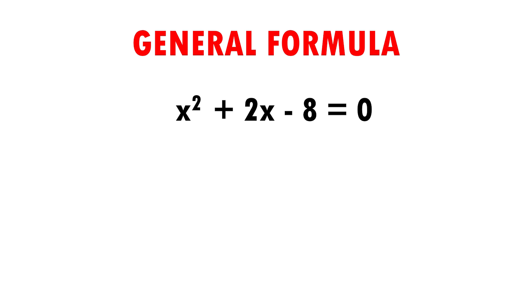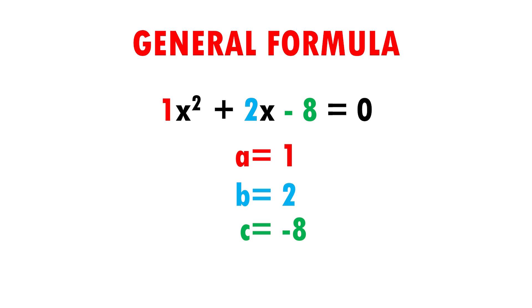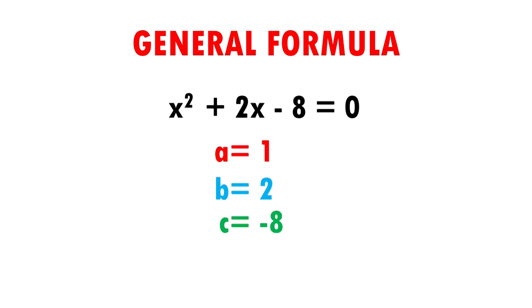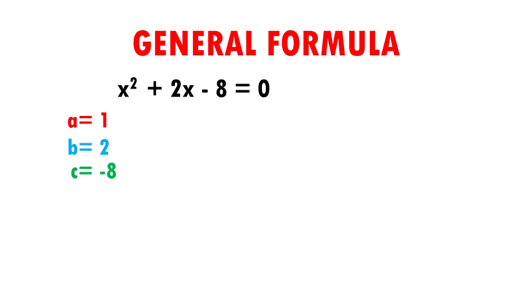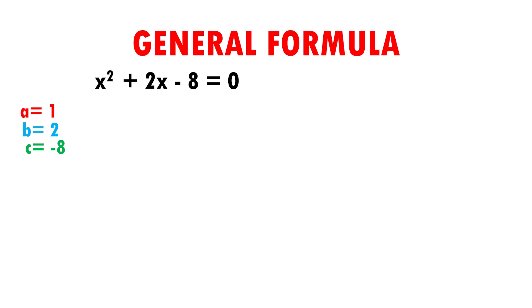Now we are going to solve an exercise. The second-degree equation we will use is x squared plus 2x minus 8 equals 0. We are going to find the values of a, b, and c. A equals 1 because although there is no number by the x squared, it is understood to be 1. B equals 2 because it is the number by the x, and c equals minus 8 because it is the number that stands alone. Remember to include the sign. Now I will write my values of a, b, c and apply the general formula: x equals minus b plus or minus the square root of b squared minus 4ac, all divided by 2a.